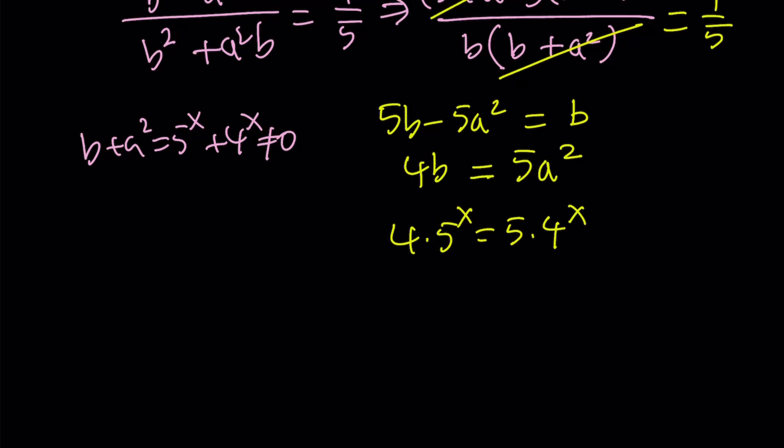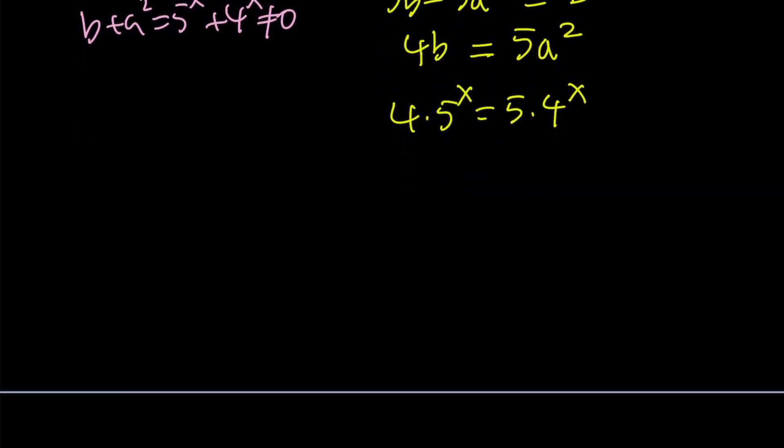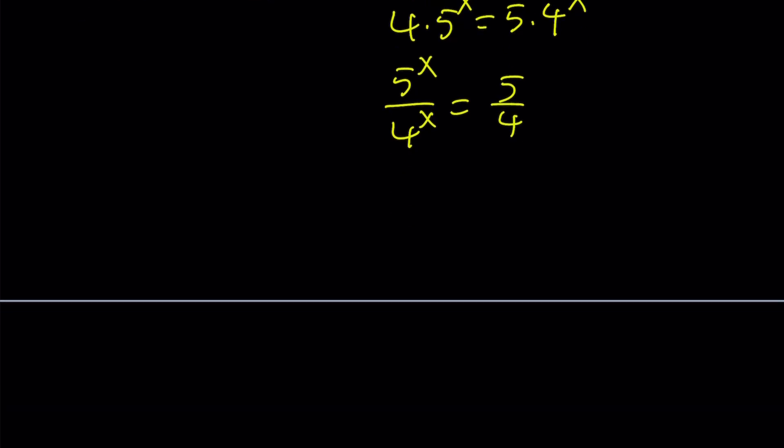Great. How do you solve this problem? Well, it should be obvious that x equals 1 at this point. But let's go ahead and make it more formal and rigorous. So let's divide both sides by 4 to the x and bring the 4 over here. And now we can write this as 5 over 4 to the power x equals 5 over 4. And this implies that x equals 1.